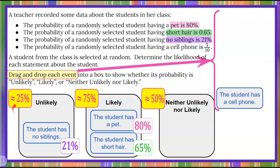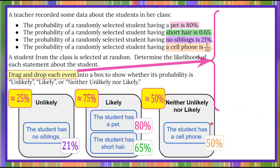Our last one: the probability of a randomly selected student having a cell phone is 5 tenths. 5 tenths written as a percent is 50 percent, so this event is neither unlikely nor likely.